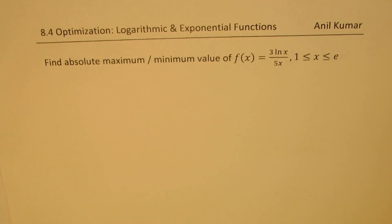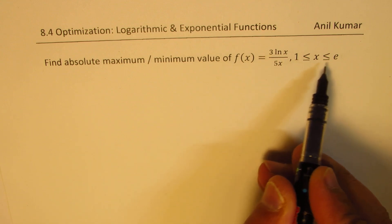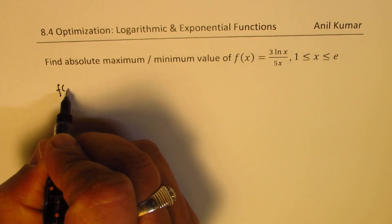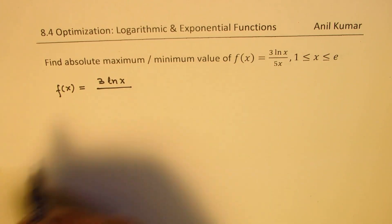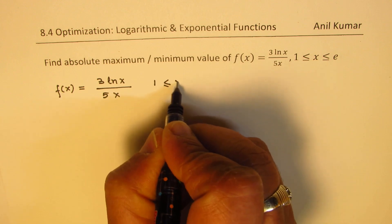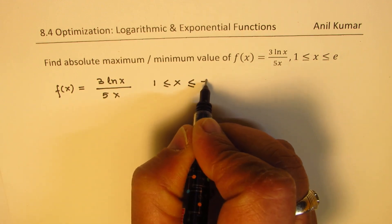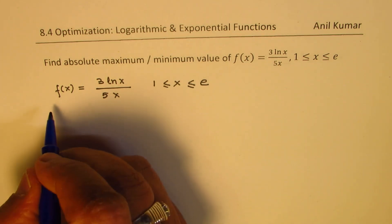Now let's begin with the very first example. We have slightly changed this question here: find the absolute maximum and minimum value of the given function in the given interval. The function is f(x) = 3ln(x)/5x and the interval is between 1 and e. We need to find the derivative, the critical numbers, and test the values at the given boundary conditions. So let's find the critical number first.